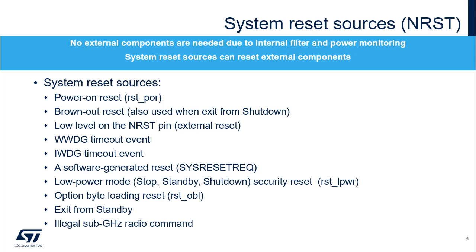Many sources can generate a system reset: an invalid voltage on the VDD or VFB SMPS supply; an invalid voltage on VDD due to brownout function, which allows the user to choose threshold levels for the VDD supply; an exit from standby or shutdown mode; a low level on the NRST pad; a timeout from the independent watchdog; a timeout from the window watchdog; a software reset request initiated by the Cortex-M4 or Cortex-M0+ core; a low power mode security reset generated when stop, standby, or shutdown mode is entered but prohibited by the option byte configuration; option byte loading; and sending an illegal command to the sub-gigahertz radio.